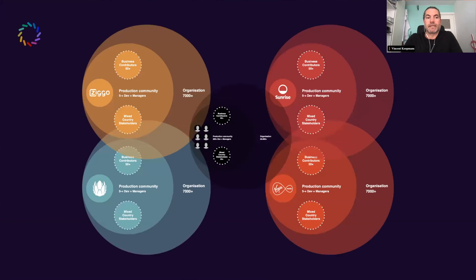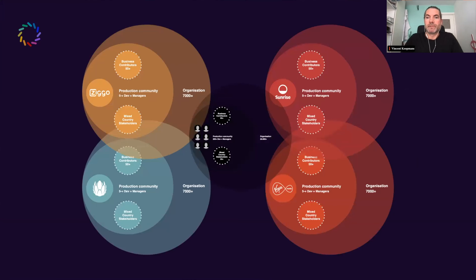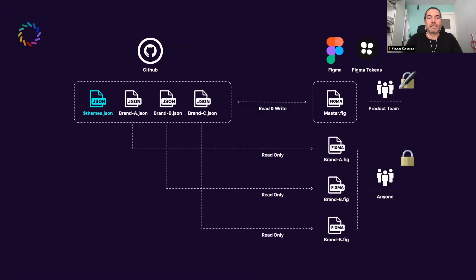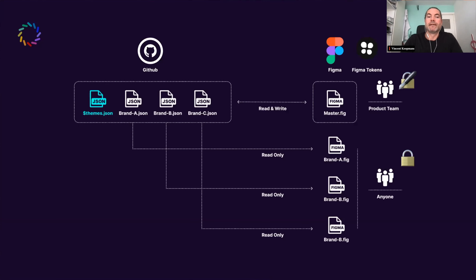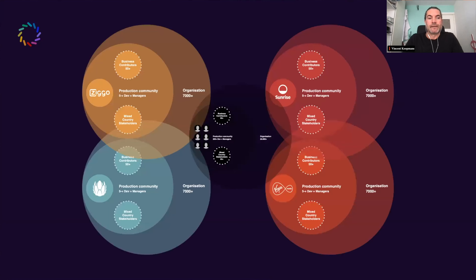In the Sketch setup, local brand teams used their own files, which became cumbersome — when we got them back and needed to implement a feature, it kind of had to start from scratch because we couldn't use their components. In this new approach, if we hand them access to the library for their country, they can create prototypes. When they come back with results, it should be really easy to implement. But as you can see, they can only read — they can use the library but don't have any edit rights for the tokens.